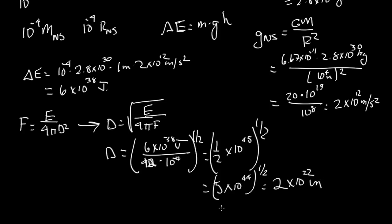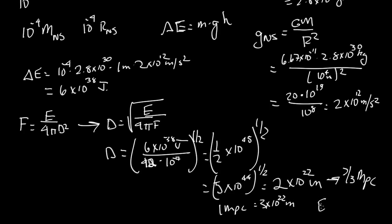One megaparsec is equal to 3 times 10 to the 22 meters, so this distance is about two-thirds of a megaparsec — roughly the edge of our galaxy.